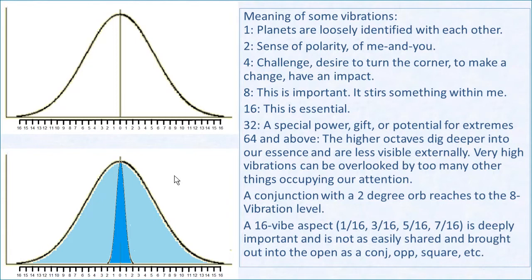If you have a conjunction in your birth chart with a two-degree orb or less, is it eight vibration as well? Yes, it is — it has the intensity of eight vibration. If it's within a one-degree orb, it has the intensity of the next octave, 16 vibration. The higher the octave, the more internal it is. So with a conjunction with a large orb, it's more in your demeanor and outer expression, but doesn't dig deep. With a small orb, it picks up the intensity of the higher vibration — digging deep into your thoughts and feelings.